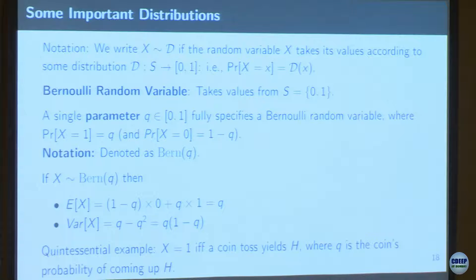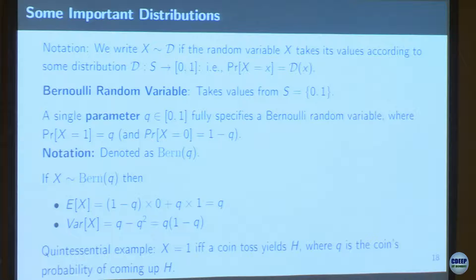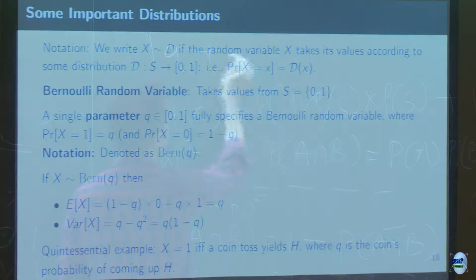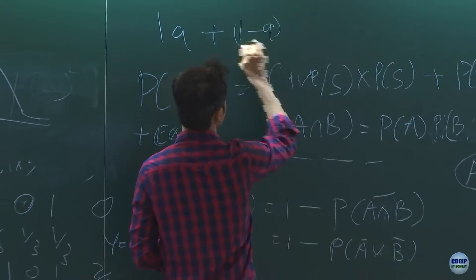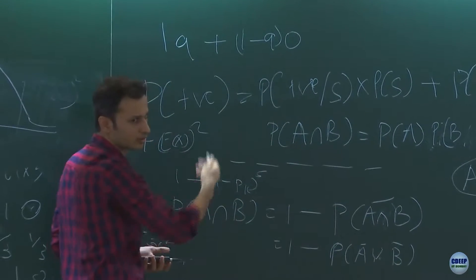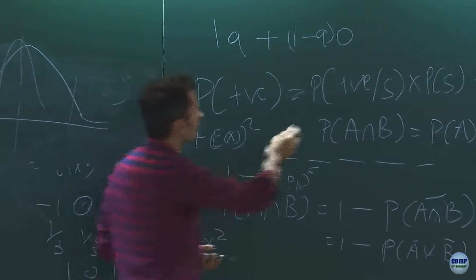One of the important distributions is the Bernoulli random variable — again like a coin toss, head or tail with some particular probability. Let's assign heads to 1. So probability of X = 1 is q and probability of X = 0 is 1 − q. The expectation would be 1 × q + (1 − q) × 0 = q. So if the probability of heads is q, the expected value is again q.